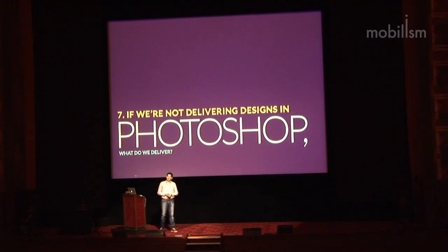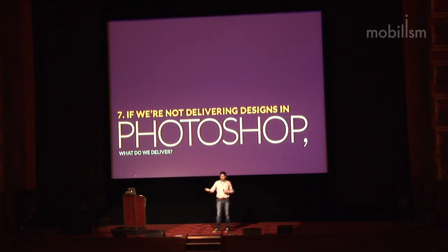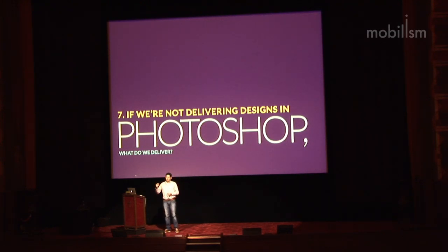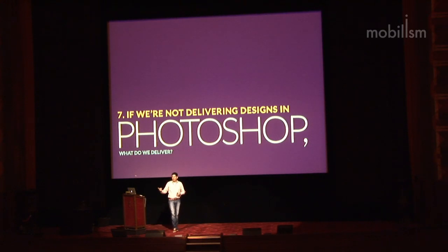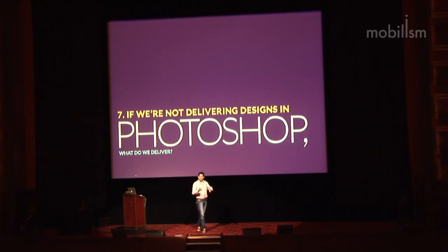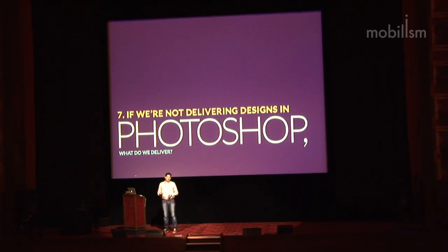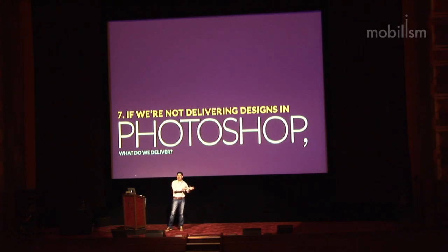The problem is we're used to delivering Photoshop documents. How many of you get Photoshop documents from a designer? A lot of you. So you have to translate those — going in, selecting something, looking at what color it's supposed to be, putting that into your CSS. Wouldn't it be better if you just got CSS with the colors already in it? Or taking a ruler and measuring space between things in pixels, then translating to ems or percentages for responsive design — not fun for developers, and frustrating for designers because they see something different than what they made in Photoshop.